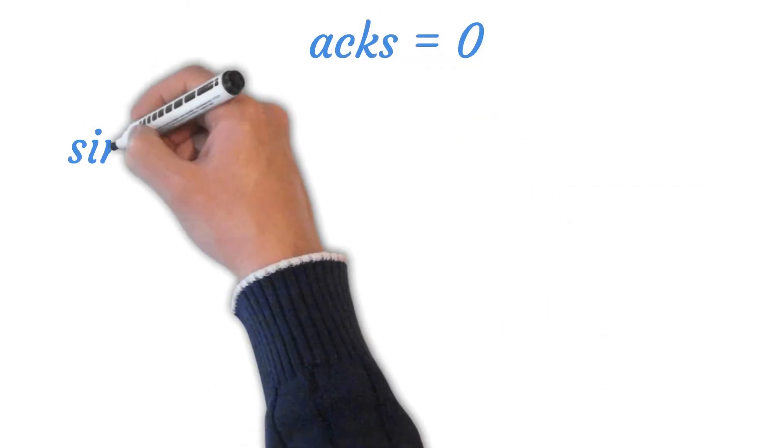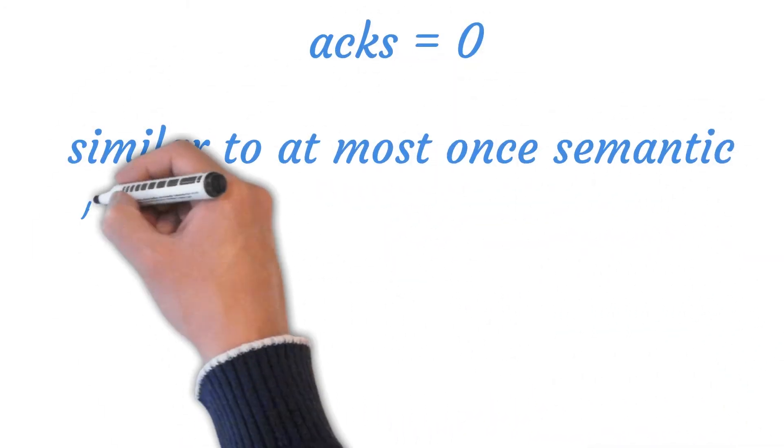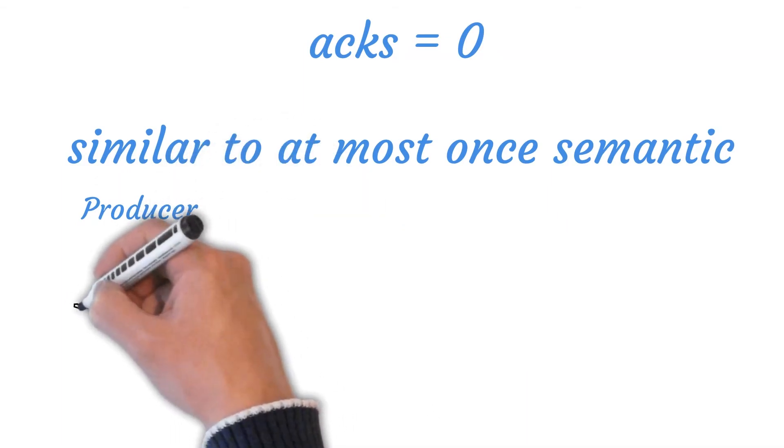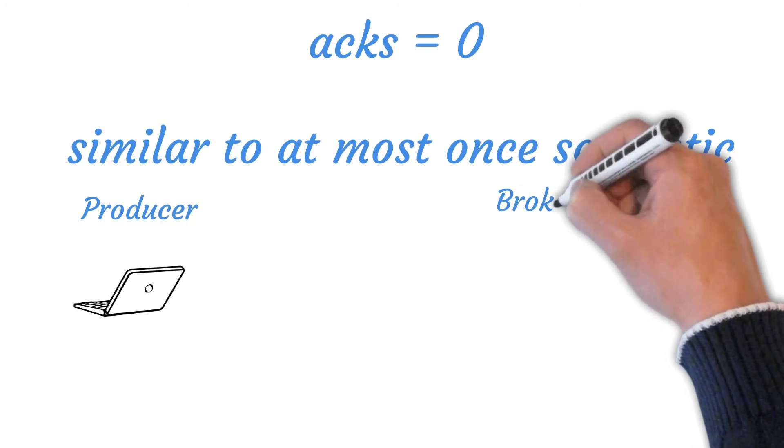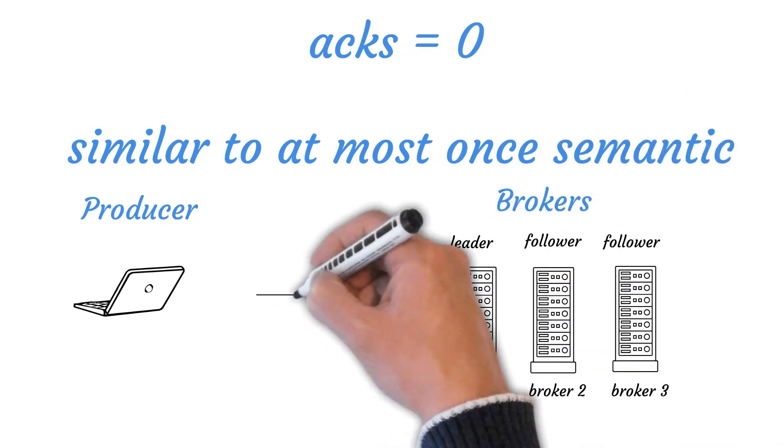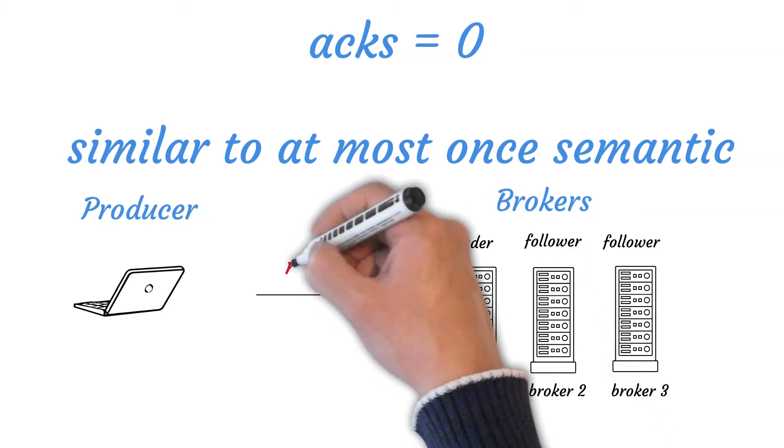The producer never waits for acknowledgement from the broker when the acknowledgement value is set to zero. No guarantee can be made that the broker has received the message. The producer doesn't try to send the record again since the producer never knows that the record was lost.